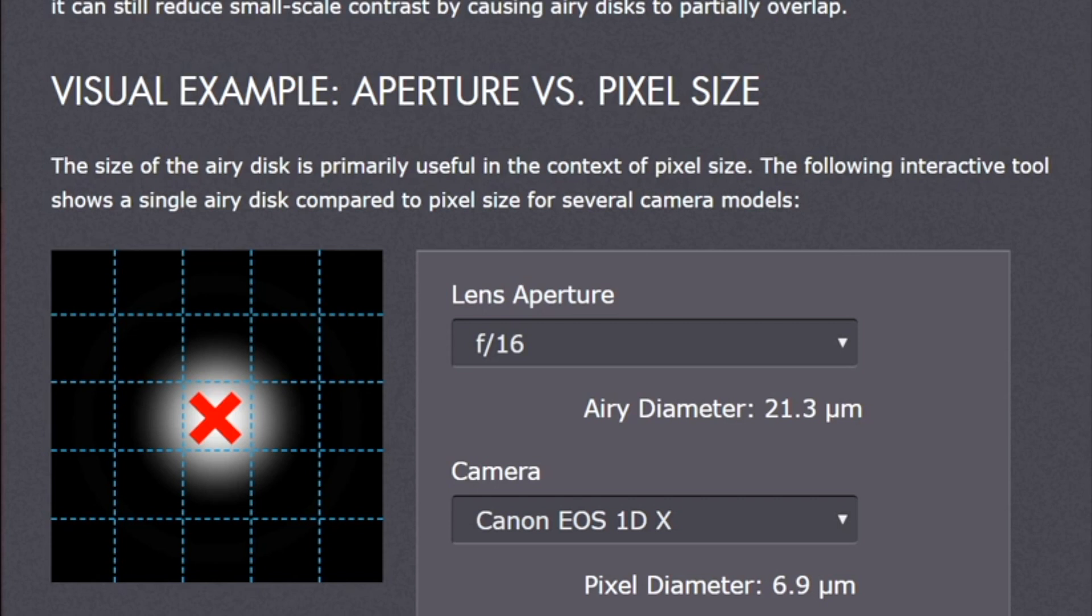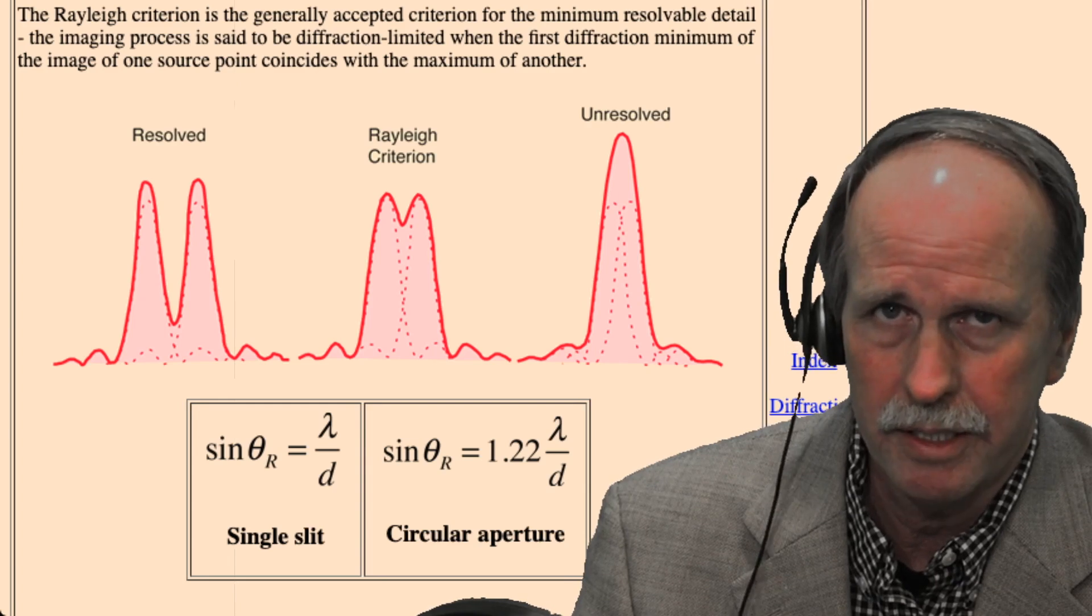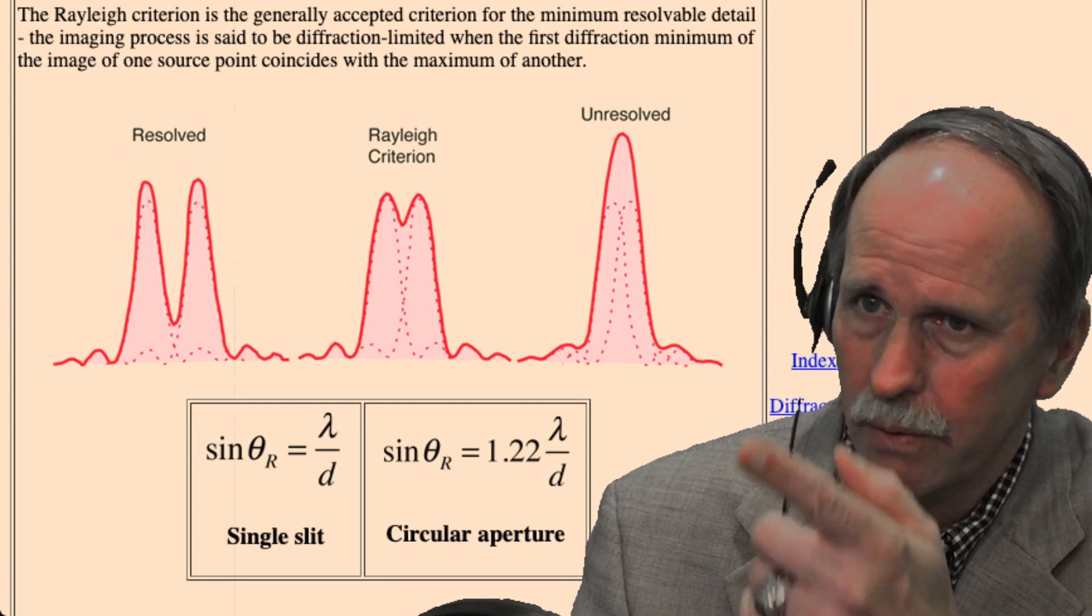Now, if the diffraction patterns get so close that the first minimum of one lies underneath the maximum of the next one, then you can't resolve them. You can't tell them apart. You can't tell that there's two objects, or two objects anymore, they will appear as one object. Well, as suspected, Conspiracy Cat does indeed know what the Raleigh Criterion is.